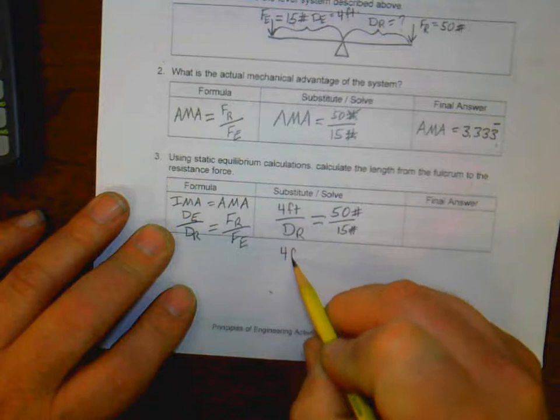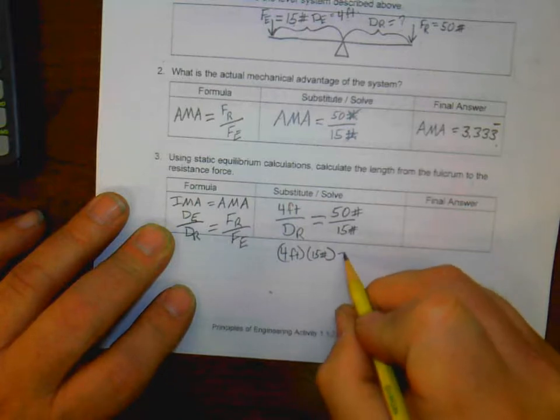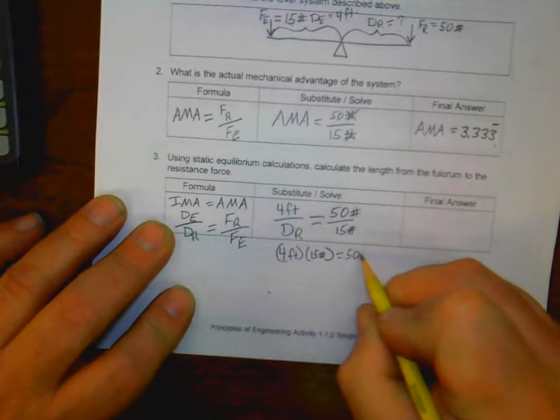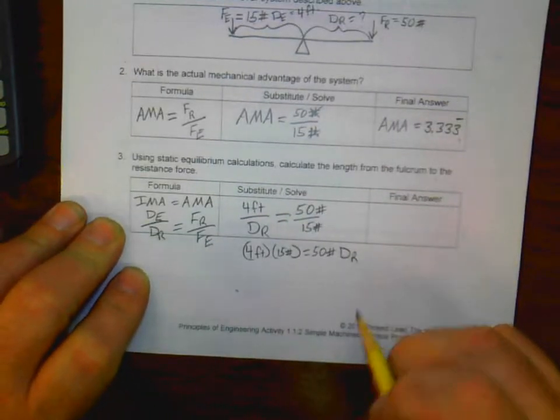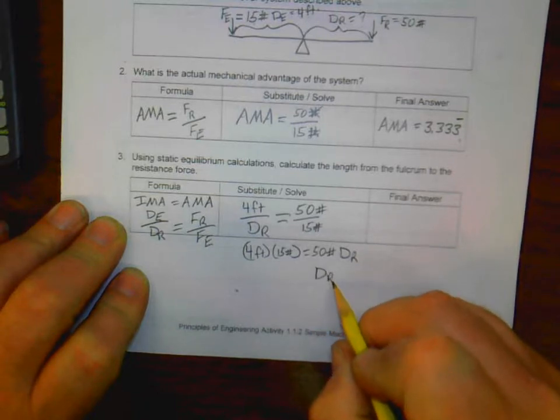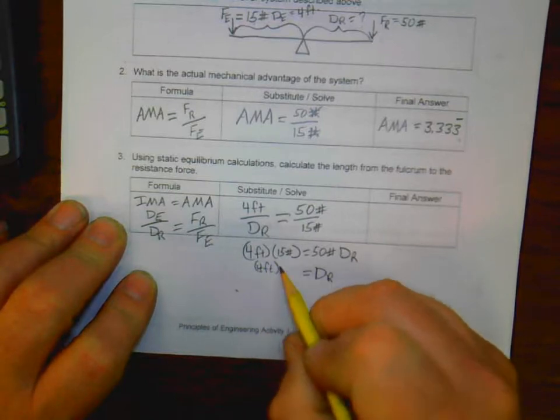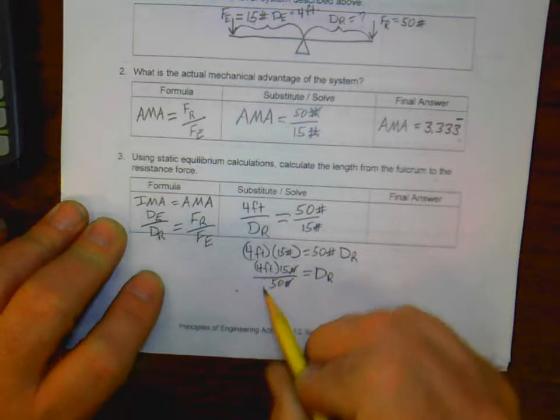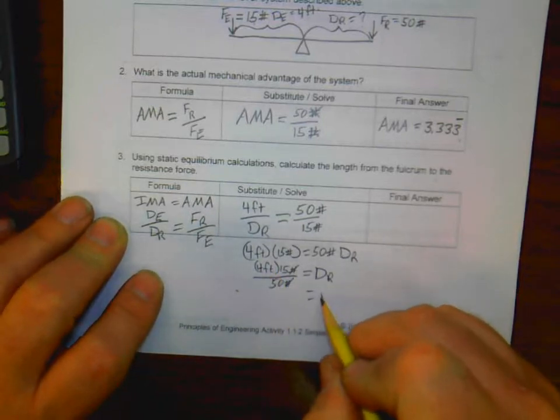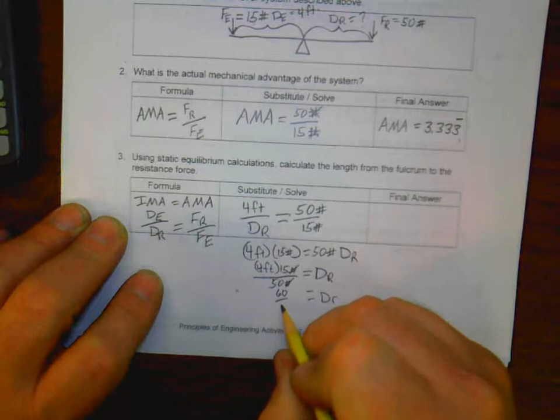I want to get DR by itself, so the algebra here, I have to divide both sides by 50 pounds. We get four feet times 15 pounds over 50 pounds. Again, pounds are going to cross out. We're going to be left with feet. Now, real quick, I can do four times 15 in my head. That's 60 divided by 50. So my distance here, my calculator, 60 divided by 50 equals 1.2, and don't forget, feet. 1.2 feet. Don't forget your unit.